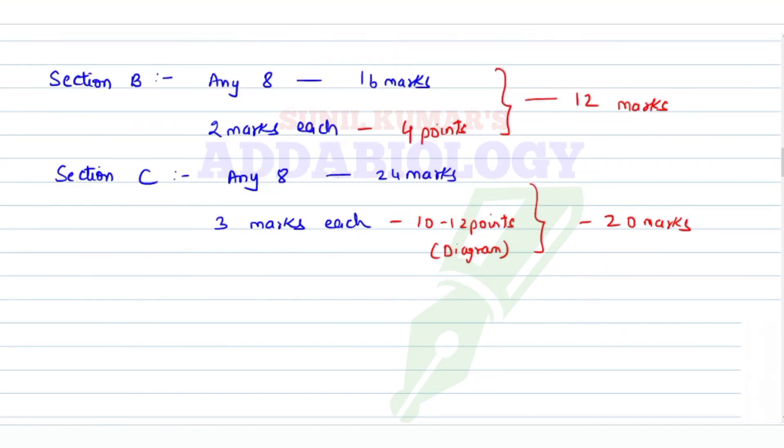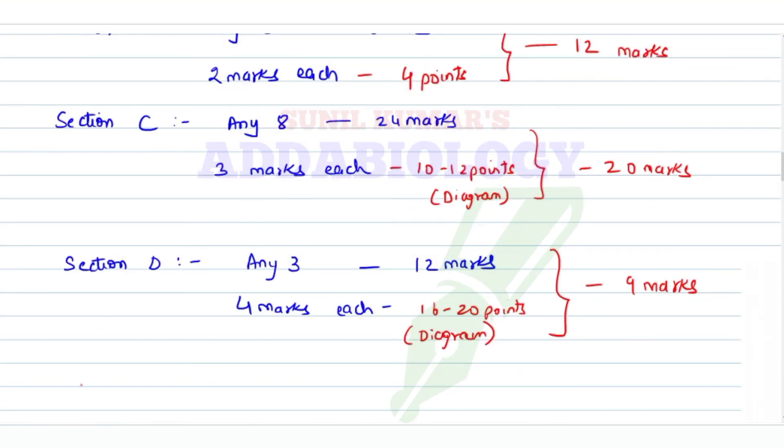Last, we have Section D where you have to attempt any 3, which is for 12 marks, so 4 marks each. For 4 marks, you're supposed to write minimum 16 to 20 points. Answer should be in points, not in paragraph, and diagram is a must. Try to score at least 9 marks. If you score all these marks, you can easily get more than 80%.